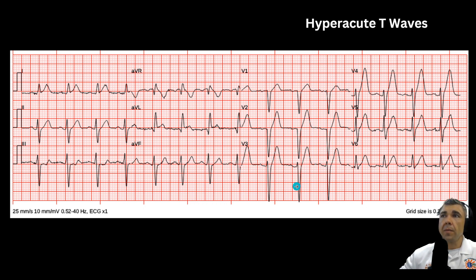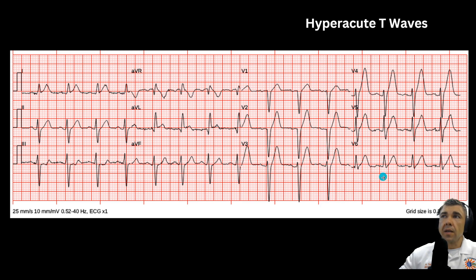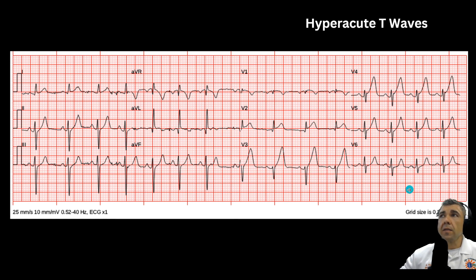Here's another example of hyperacute T-waves. Again, these are broad-based, tall, and very symmetrical. It's common to see these in the anteroseptal leads and the anterior leads as a whole, all the way to the lateral wall. You can also see them sometimes in the inferior leads if the patient is having an inferior wall MI. This pattern reinforces the anteroseptal wall MI — LAD occlusion patient. Remember, these are the ones that die fast, so you want to be ready to treat these patients.